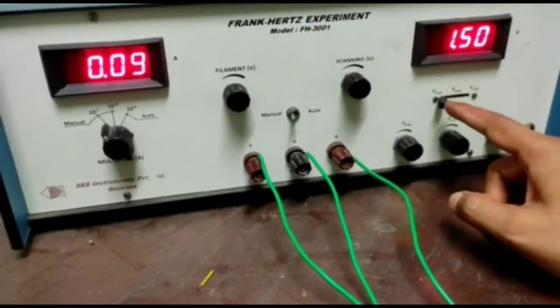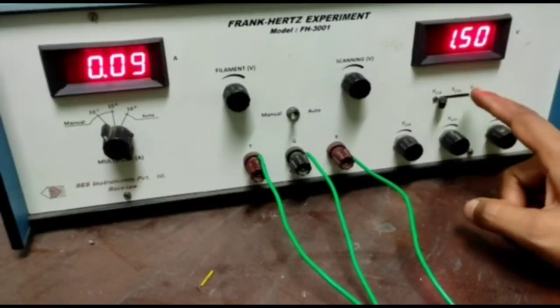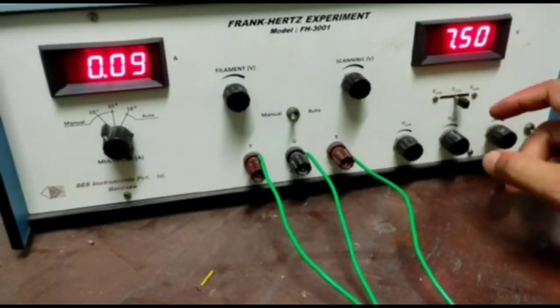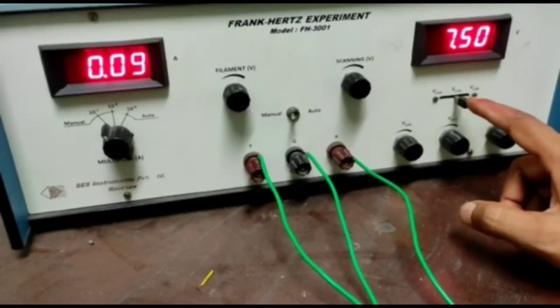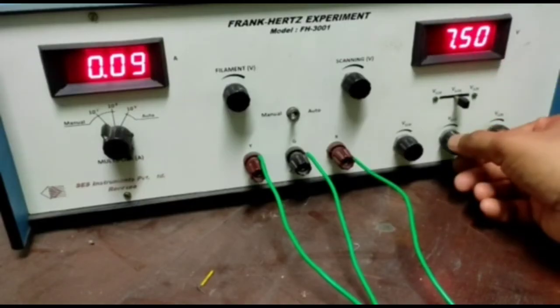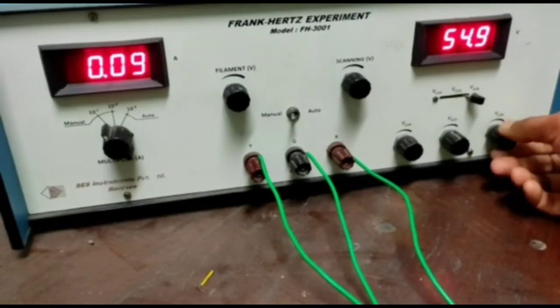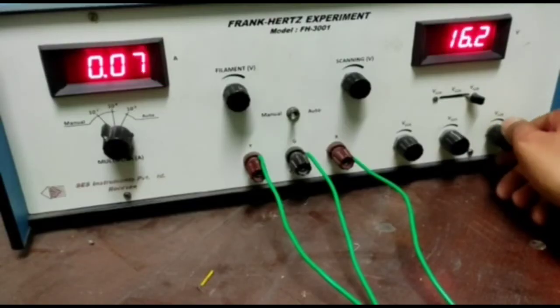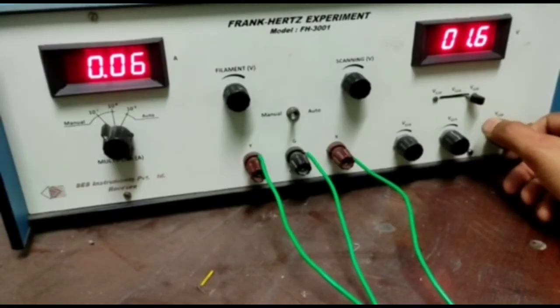Now turn the voltage selector. This is your voltage selector, that is VG1K and this value should be at 1.5 volt. It is already in 1.5 volt. Now move it here at VG2A position and this is 7.5 volt, already it is 7.5 volt, I adjust it at 7.5 volt. Now move it to VG2K position at its minimum position. This is its minimum position. These are the values for the experiment.